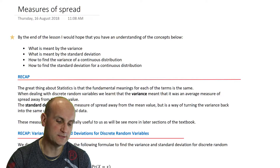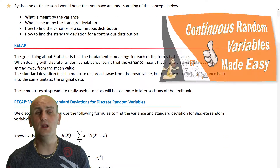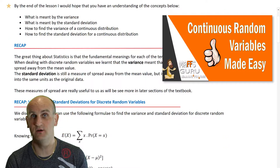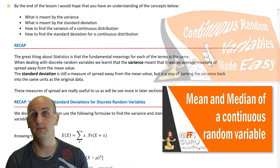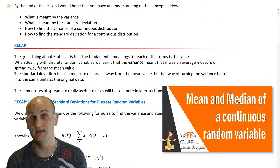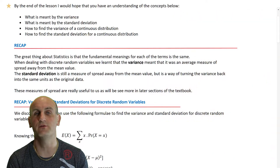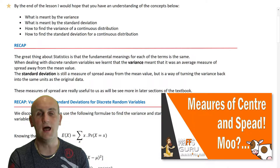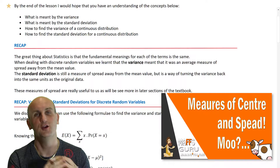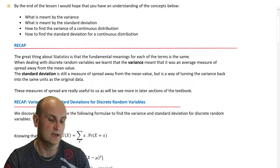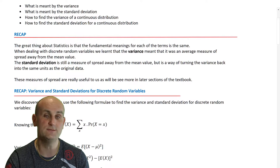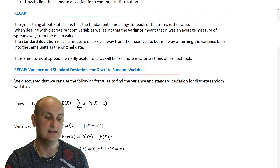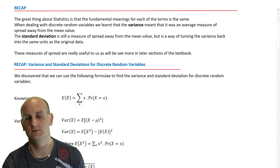What are we hoping to do by the end of the lesson? In previous videos we've dealt with continuous random variables, the mean, median and percentiles. Spread is talking about variance and standard deviation. We've done that with discrete random variables, and if you've understood it for discrete you should be able to understand it for continuous.